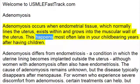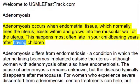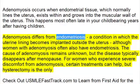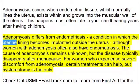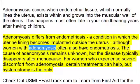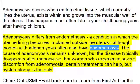This happens most often late in your childbearing years after having children. Adenomyosis differs from endometriosis, a condition in which the uterine lining becomes implanted outside the uterus, although women with adenomyosis often also have endometriosis.